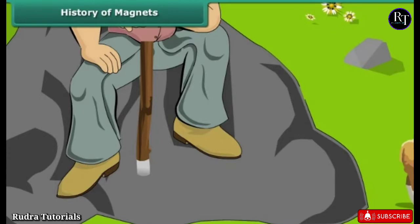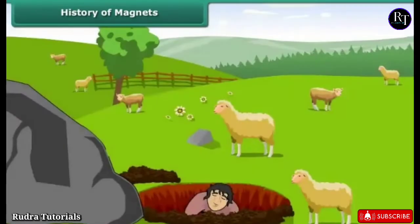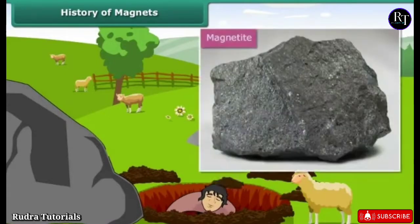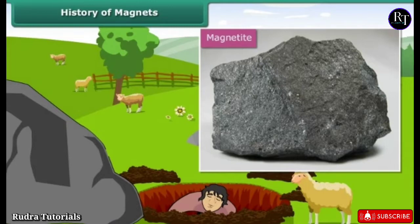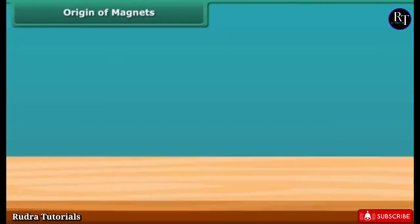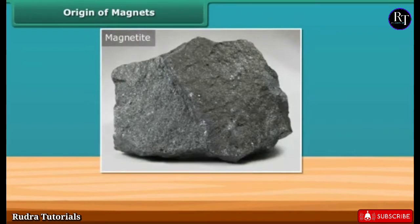To find the source of attraction, he dug up the earth to find magnetite, a natural magnetic material. This type of rock was subsequently named magnetite, which was named after Magnus himself. Origin of magnets — magnetite is a natural magnet and contains iron.